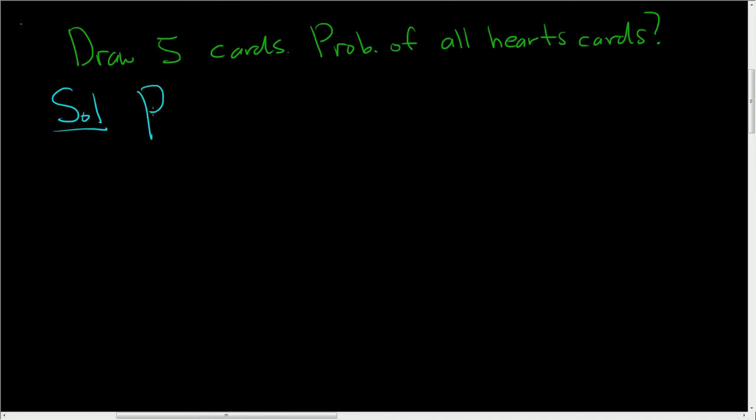Let's write down what we want. We want the probability that every single card is a hearts card. That means the probability that the first one is a heart, and the second one is a heart, and the third one is a heart, and the fourth one is a heart, and the fifth one is a heart.